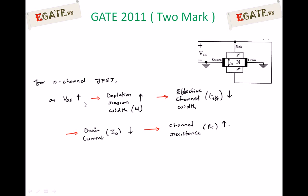The operation of the N-channel JFET can be explained as follows: as VGS increases negatively — meaning more negative voltage is applied — the depletion region width W increases. This is because the P-plus N junctions become more reverse biased. The N side is more positive than the P side, putting both P-plus N junctions under reverse bias. Under increased reverse bias, the depletion region width increases.